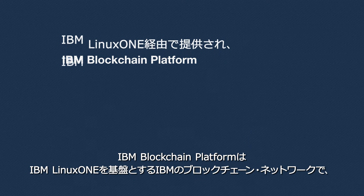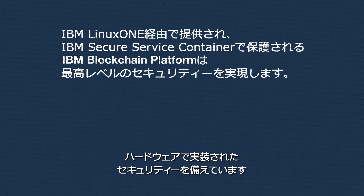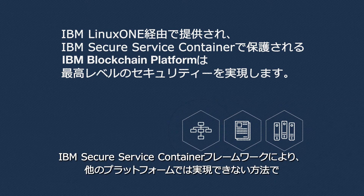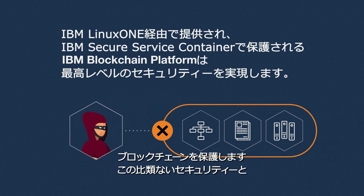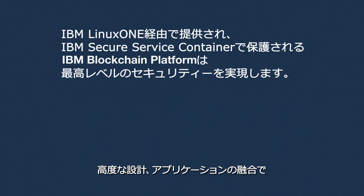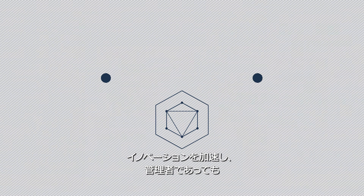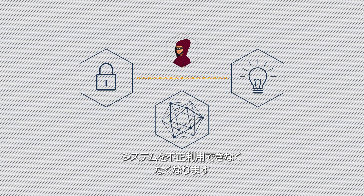The IBM blockchain platform, delivered via IBM LinuxONE, features integrated security from the hardware up. The IBM secure service container framework protects your blockchain from unauthorized access in ways no other platform can deliver. Coupling this unmatched security with advanced blockchain design and applications, this offering accelerates innovation and prevents everyone, even administrators, from taking control of your system.